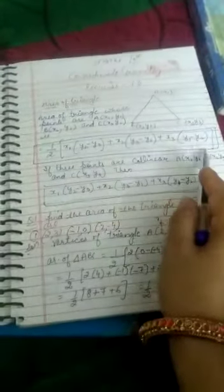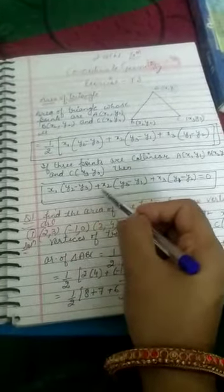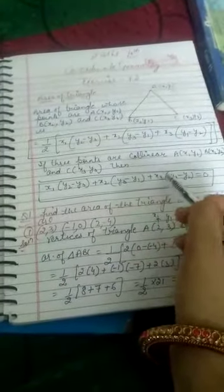You will think where half went from here. I have half equal to this side, then we have 0, square bracket cancel, so we have simple x1(y2-y3) + x2(y3-y1) + x3(y1-y2) that is equal to 0. These are 2 formulae, this is the formula for area of triangles if the points are collinear.